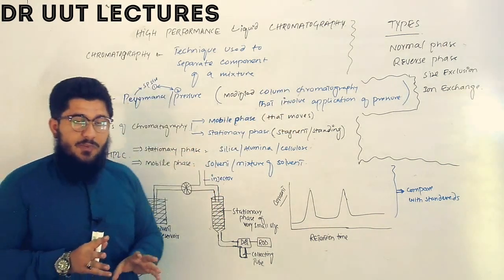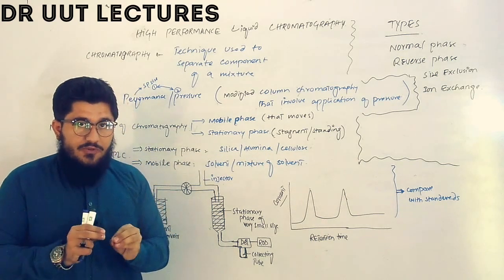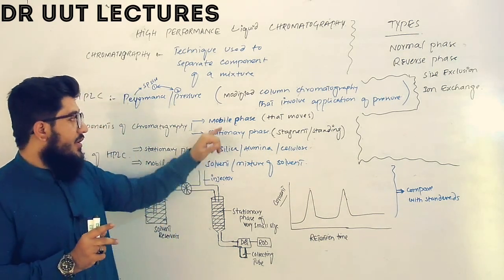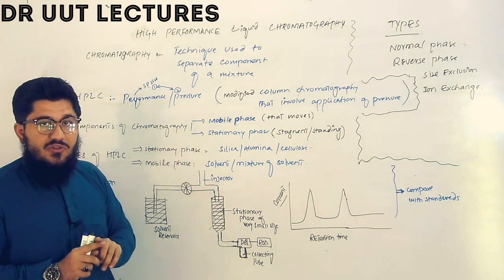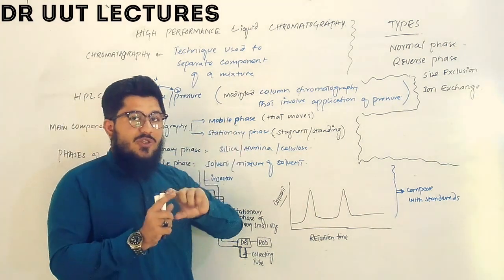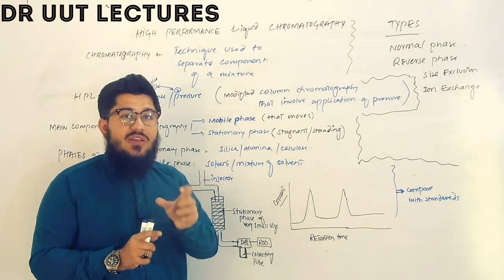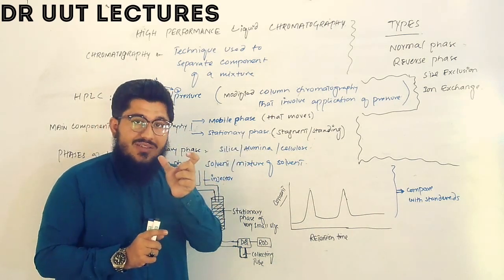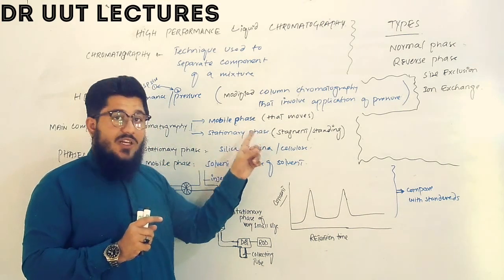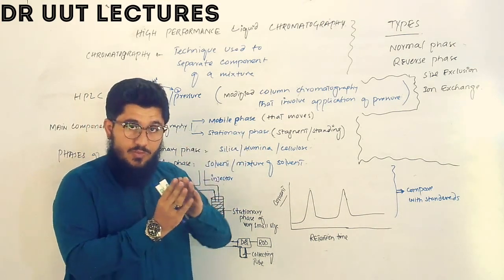Now let's come to the main components of any chromatography. In every chromatography we use two main components: the mobile phase and the stationary phase. The mobile phase is the phase that is actually moving, and the stationary phase is the phase that is standing or stagnant. These two phases help us to separate our mixture into components.